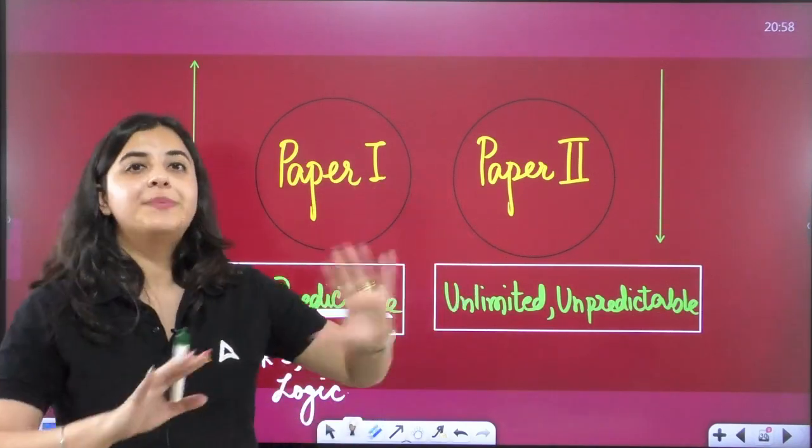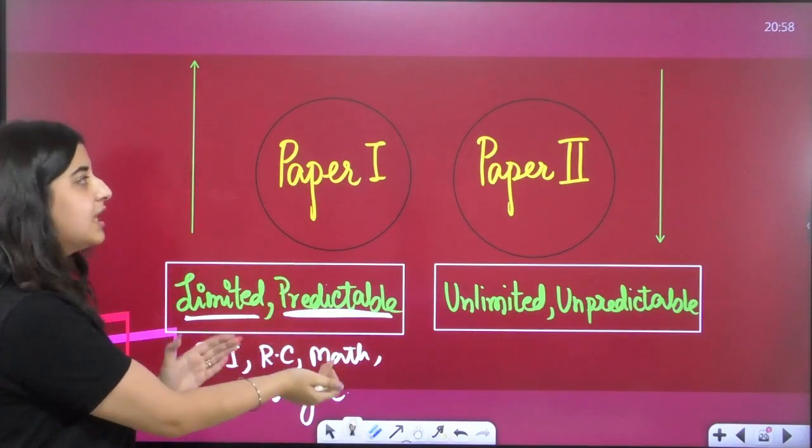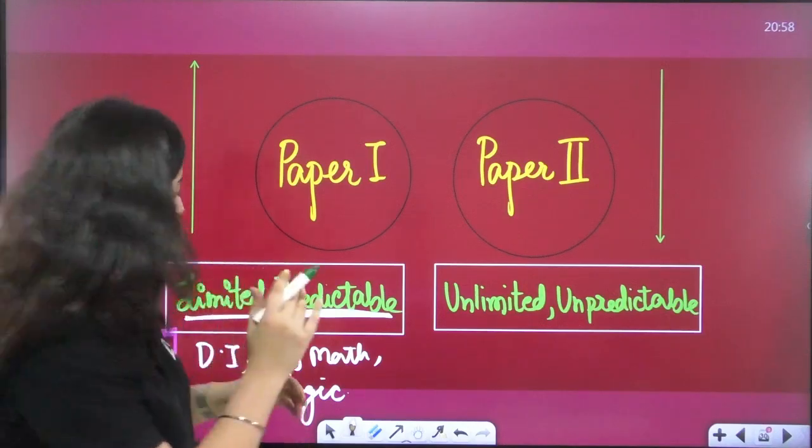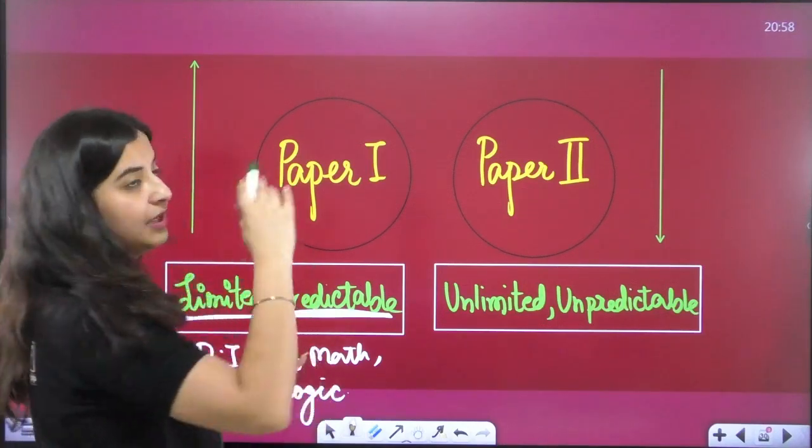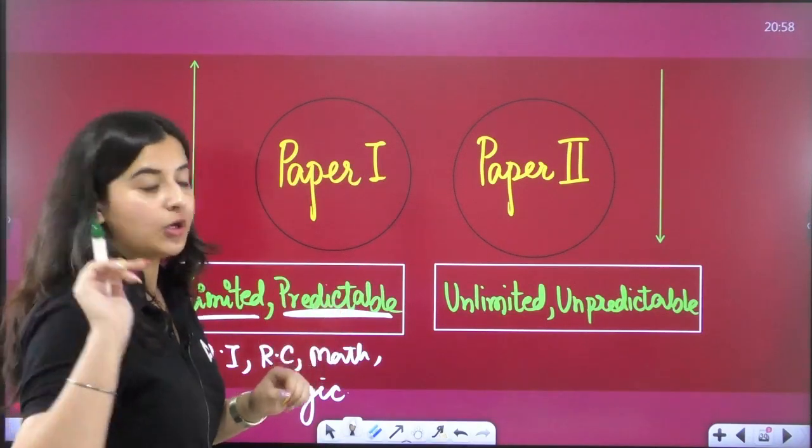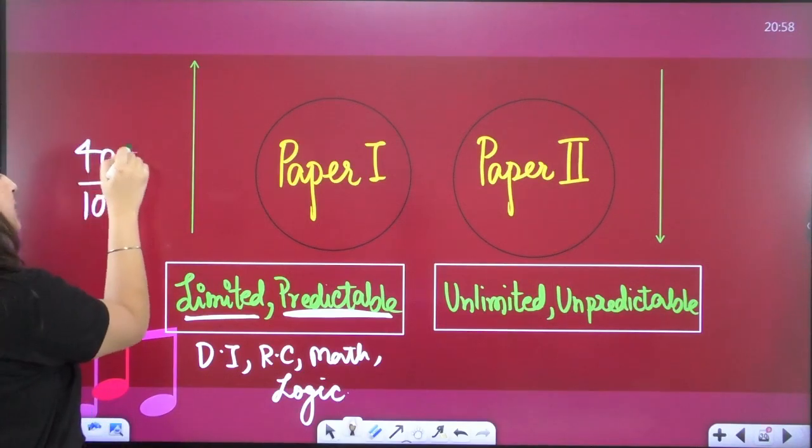Paper 2 is a whole preparation base, but this portion, particularly these units in paper 1, you give an edge. This is a portion, where you have 4 units into 5 questions per unit is 20 questions, 20 questions into 2 marks is 40 marks. So, out of 100, 40 marks, you can secure it here.